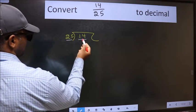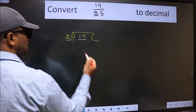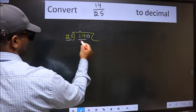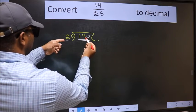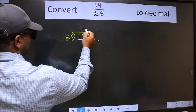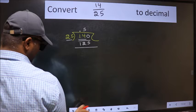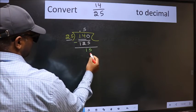14 is smaller than 25, so what we should do is put a dot and take 0. So 140. A number close to 140 in the 25 table is 25 times 5 equals 125. Now we should subtract. We get 15.